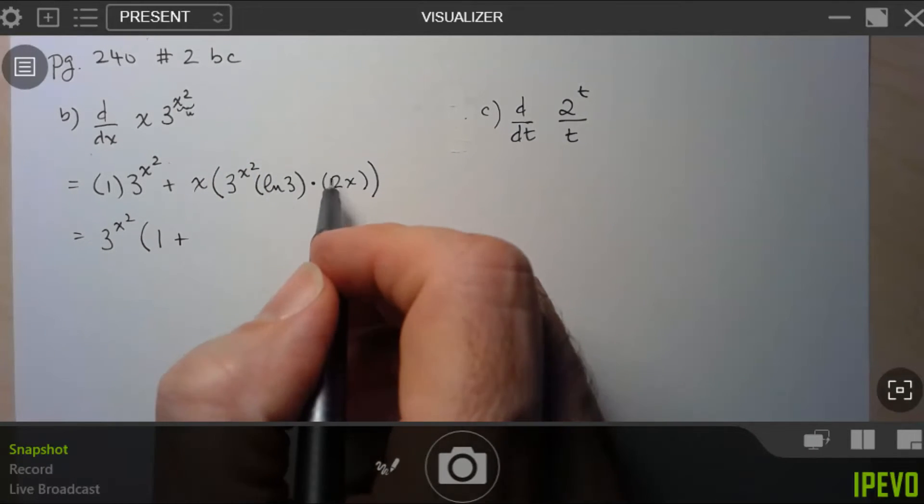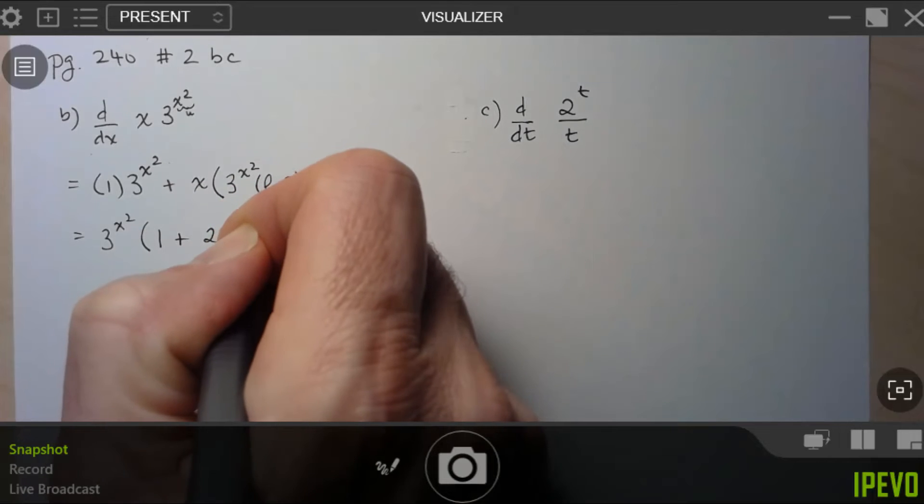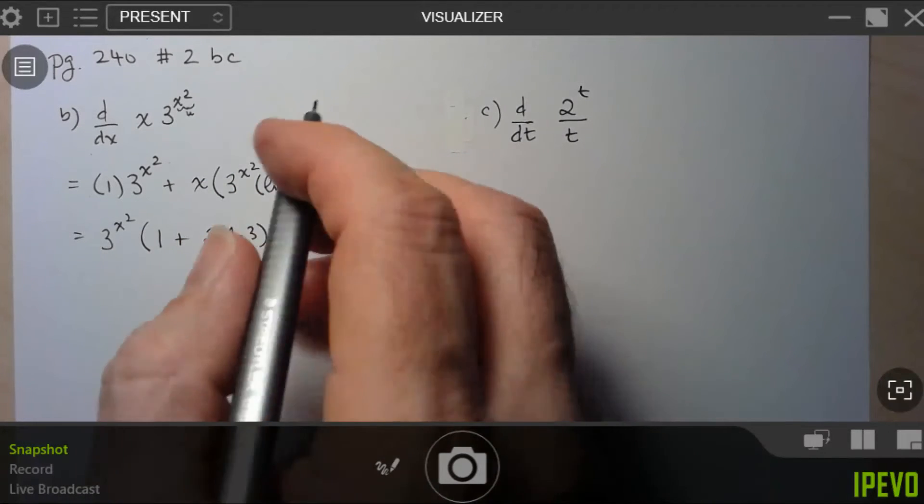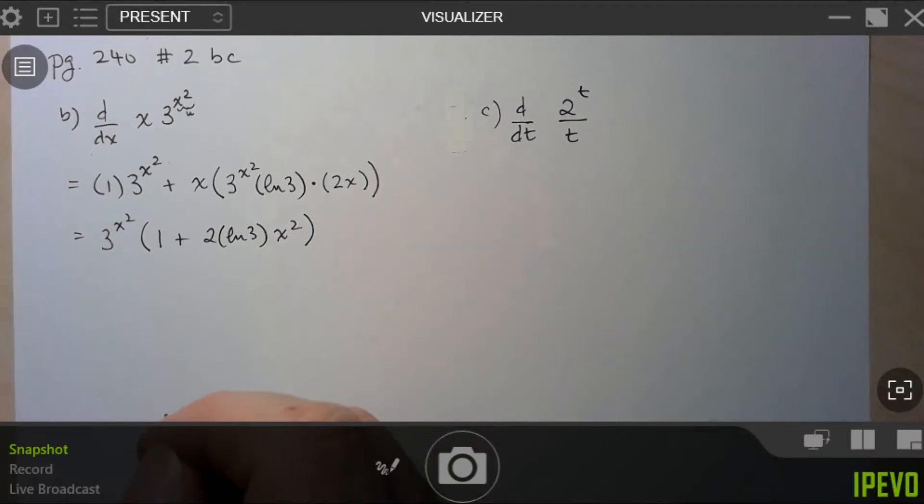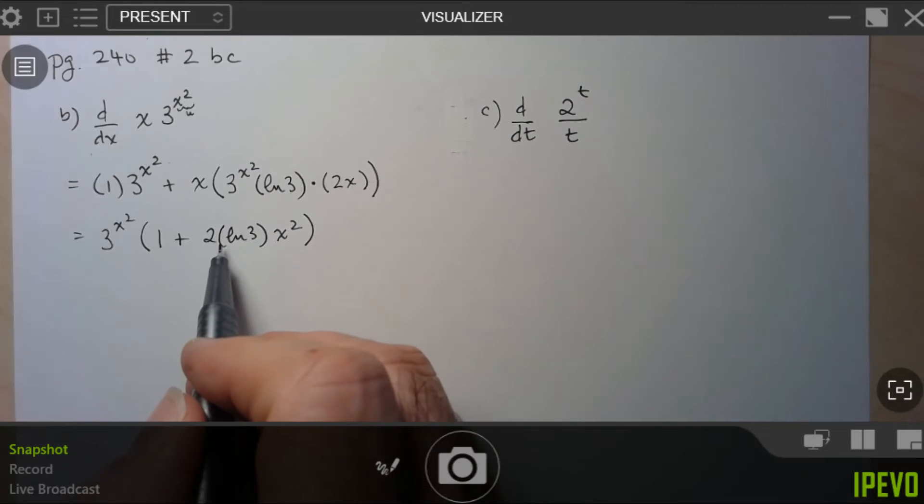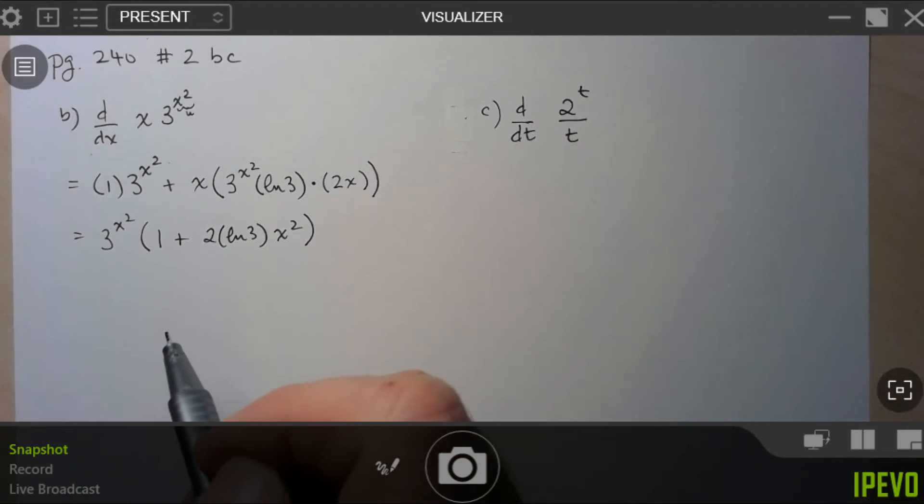Well, let's get the constants. So we have 2 ln 3, and then we've got x times x, x squared. And that's about as simplified as you could get. You could, of course, use the ski slope rule to write this as ln of 9 if you wanted to.